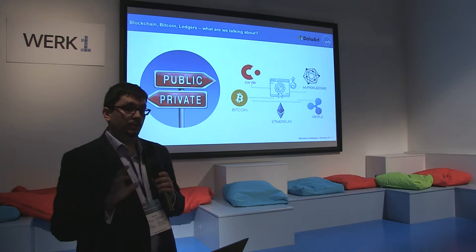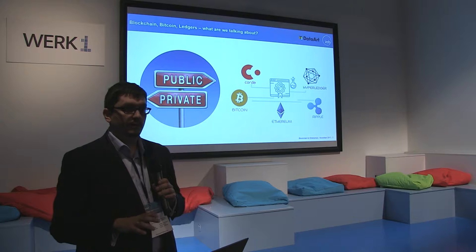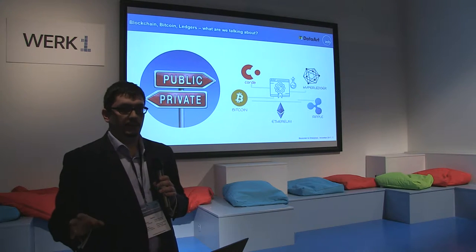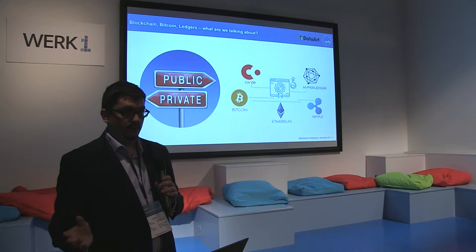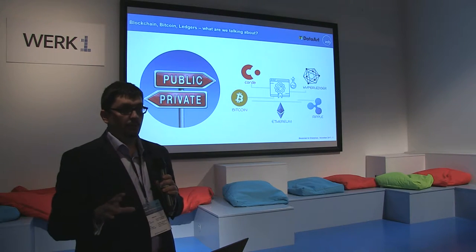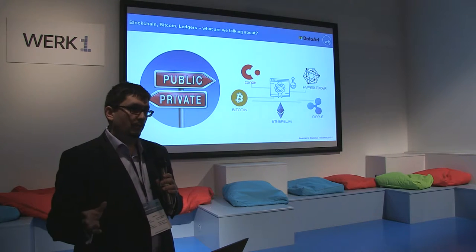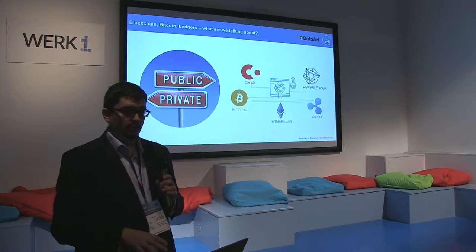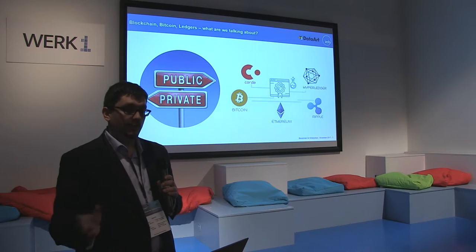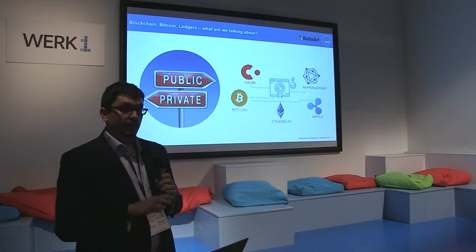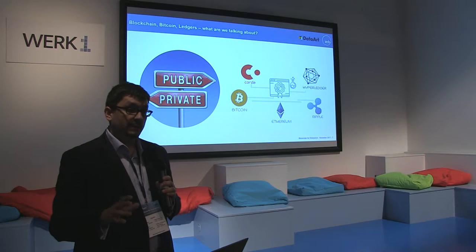I want to be quite clear: cryptocurrencies and blockchain are not the same thing. Bitcoin is something created based on blockchain. But we have so many different blockchains — there is no single protocol, no authority can say 'please use Hyperledger everywhere.' You have to choose your own for your own product. Hyperledger, Ethereum, and Ripple each have their own pluses and minuses, pros and cons. And if you talk about two broad clusters, it would be public and private blockchains.